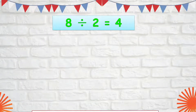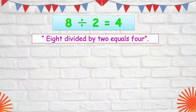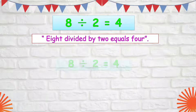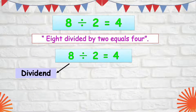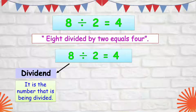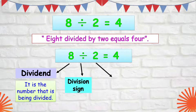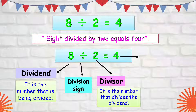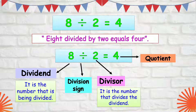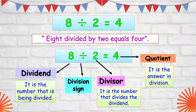This can be read as 8 divided by 2 equals 4. Let us label the parts of this division sentence. 8 is the number of stars — that is what we call the dividend; it is the number that is being divided. 2 is the number of boxes — that is the divisor; it is the number that divides the dividend. And 4 is our quotient — the answer in division.